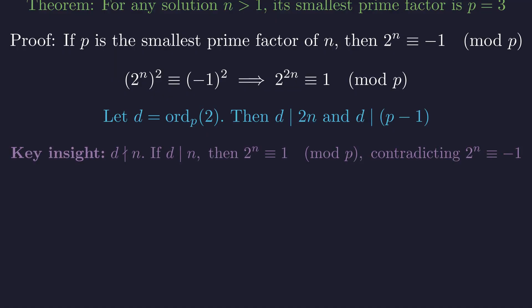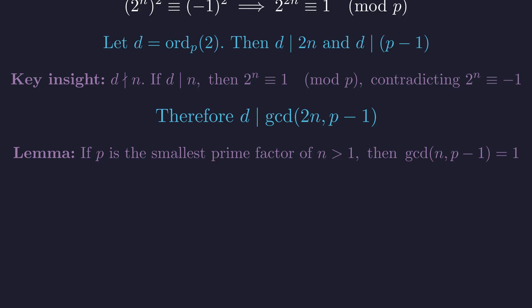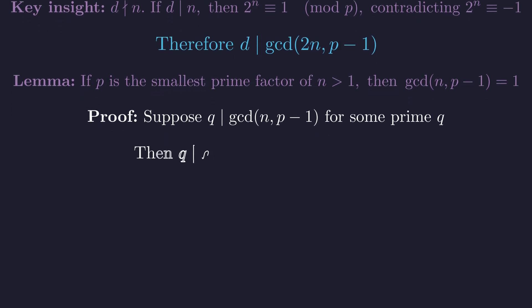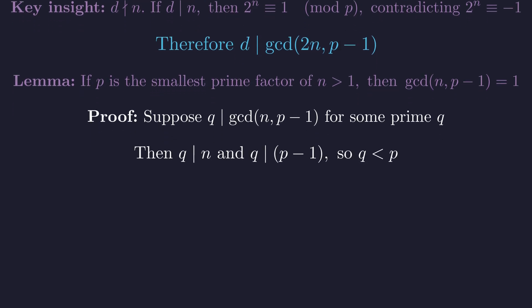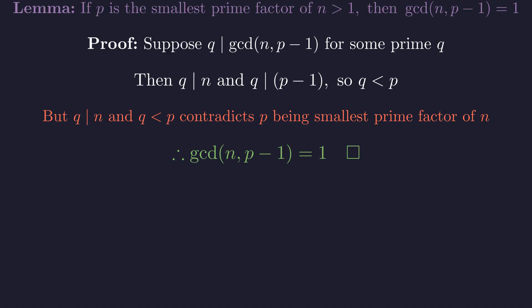Let's pause to note a crucial subtlety. The order d cannot divide n. If it did, 2 to the n would be congruent to 1. But we know it's congruent to negative 1, which would imply p divides 2. An impossibility. So d must divide their greatest common divisor. We need a crucial lemma. If p is the smallest prime factor of n greater than 1, then the greatest common divisor of n and p minus 1 equals 1. Proof by contradiction. Suppose some prime q divides both n and p minus 1. Since q divides p minus 1, we have q is strictly less than p. But this contradicts our assumption that p is the smallest prime factor of n. Therefore, no such q exists. Therefore, the greatest common divisor of n and p minus 1 is exactly 1, completing the proof of our lemma.